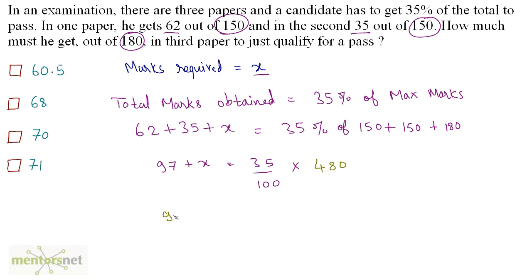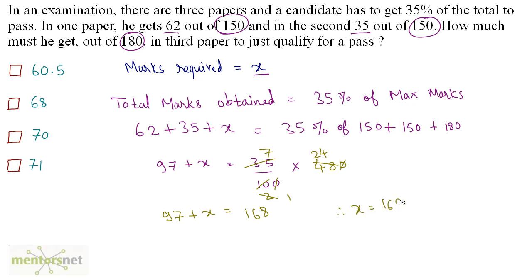So 97 plus x is equal to 35% of 480, which gives 168. Therefore x is equal to 168 minus 97, and that is equal to 71. So option D is the right answer.